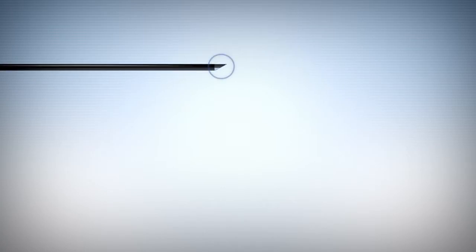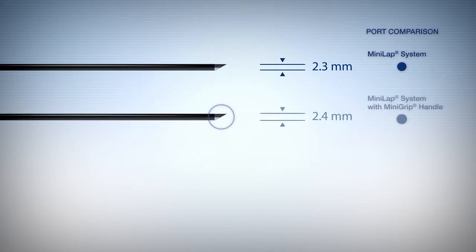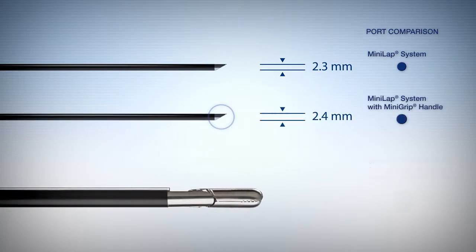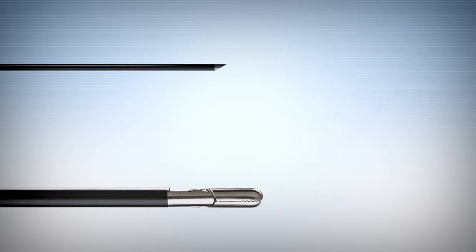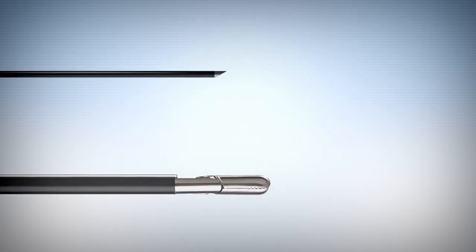Using its integrated needle tip, the 2.3 mm Minilap device or 2.4 mm Minilap device with Mini Grip Handle is percutaneously inserted without the use of a trocar into the abdomen. Percutaneous insertion can result in less trauma for the patient and the use of fewer trocars.